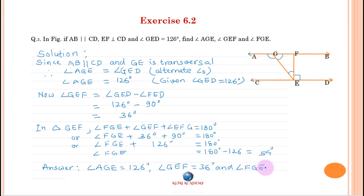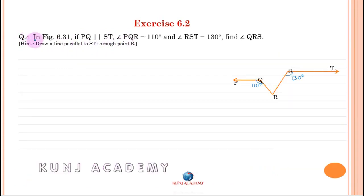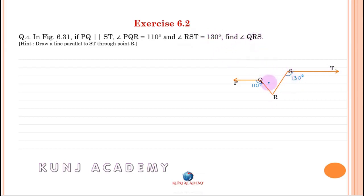Question: In the figure, PQ is parallel to ST. Angle PQR equals 110 degrees, and angle RST equals 130 degrees. Find angle QRS — this is the angle we have to find.